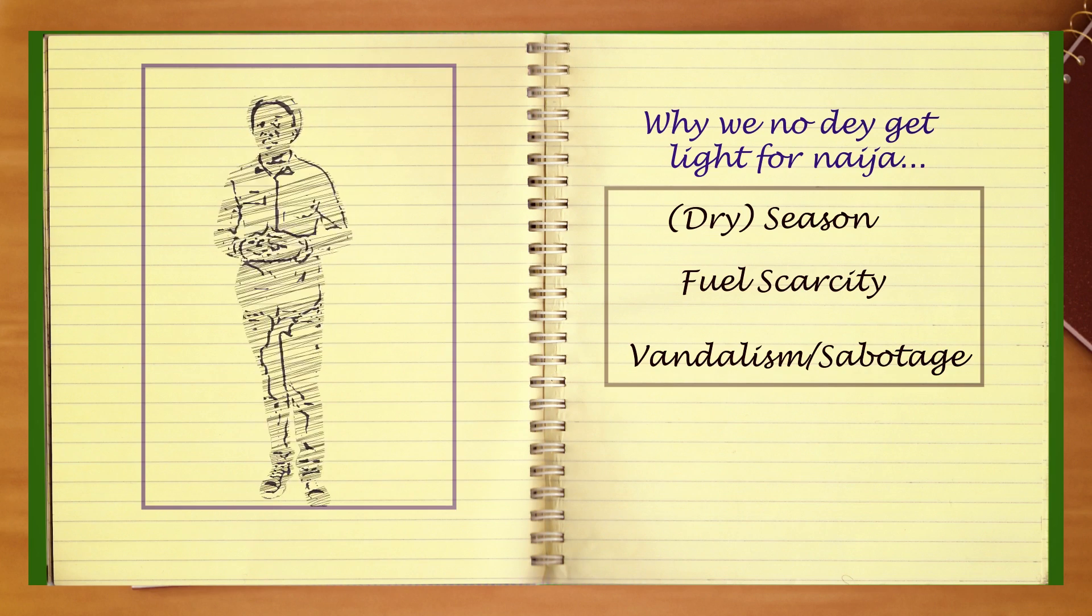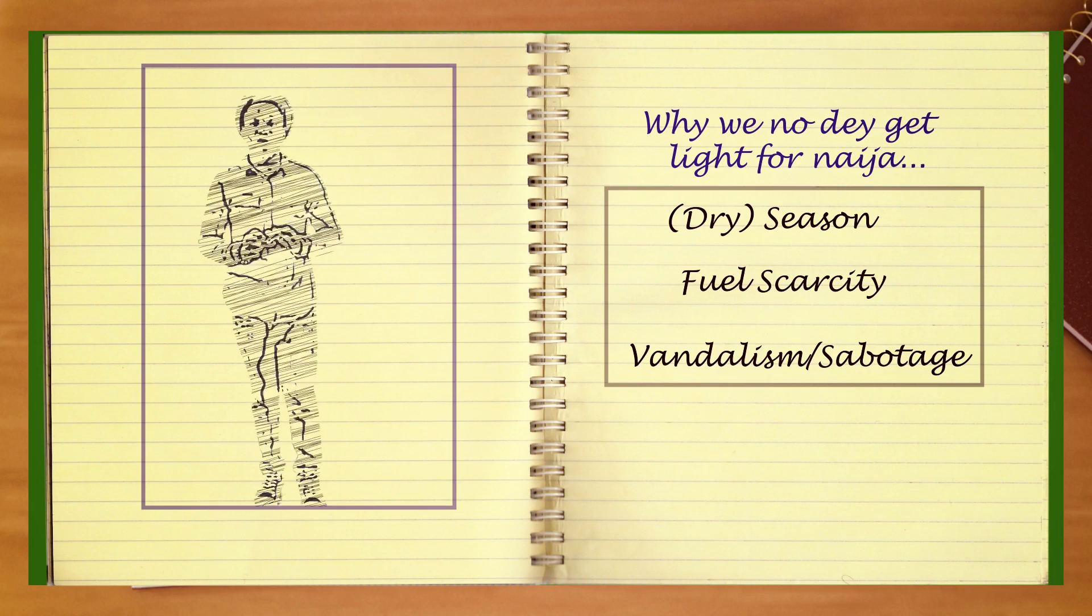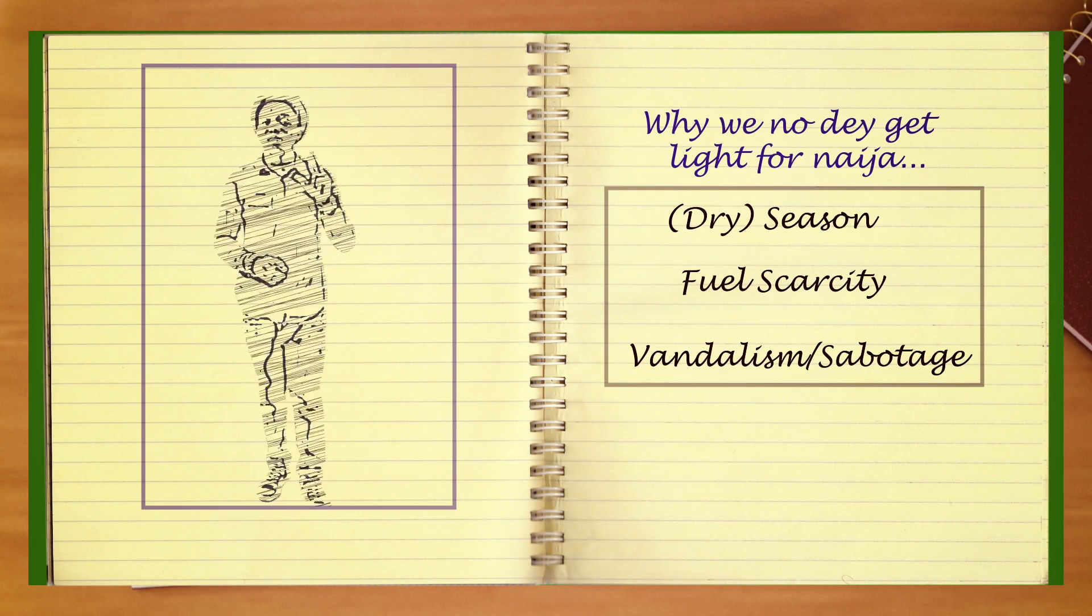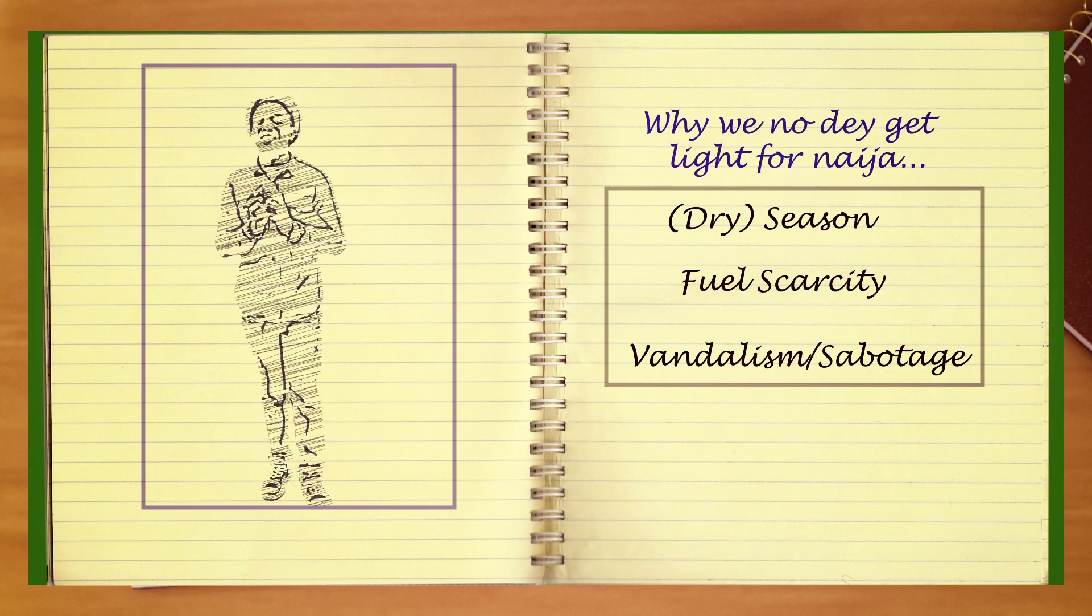The reasons why we don't get lights are: number one, the season affects the lights we get. Number two, fuel scarcity. And number three, pipeline vandalism.